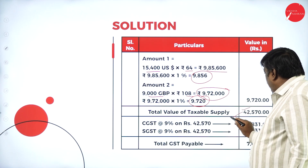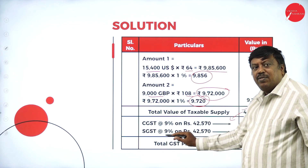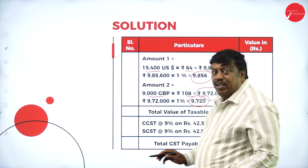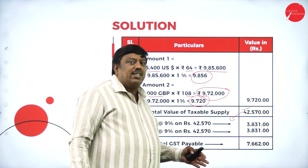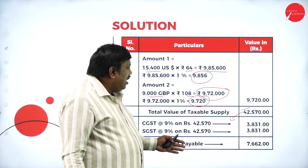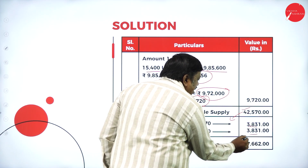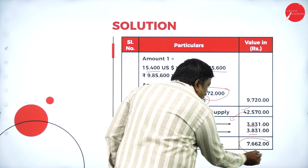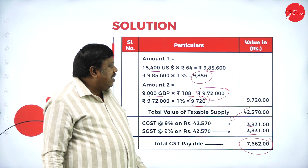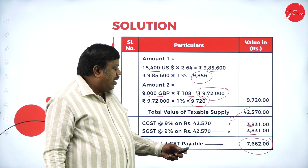On the total taxable value of ₹42,570, we charge 9 percent for central government and 9 percent for state government. The GST calculation gives ₹3,831 each for CGST and SGST. Total GST payable = ₹7,662.